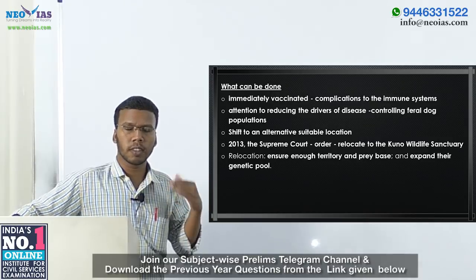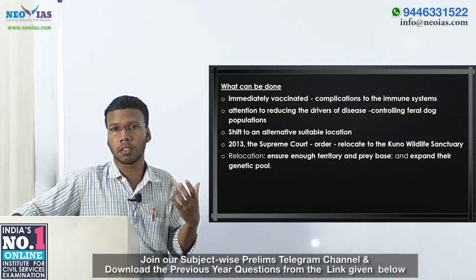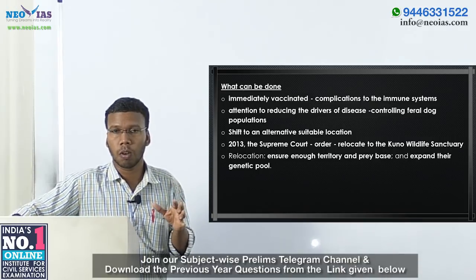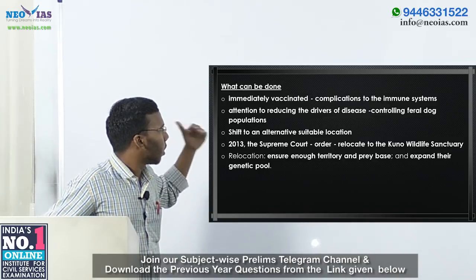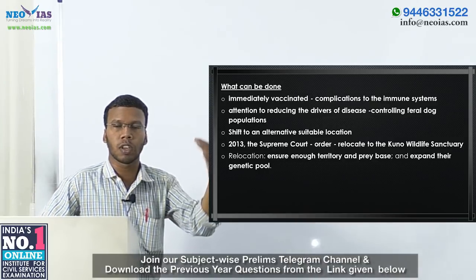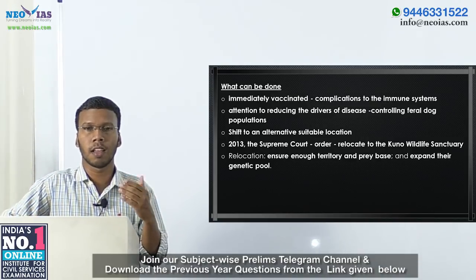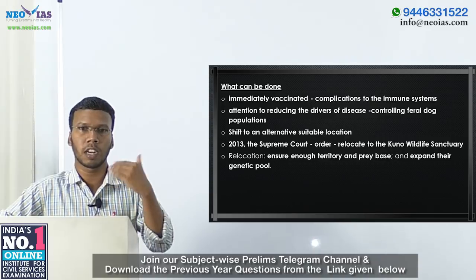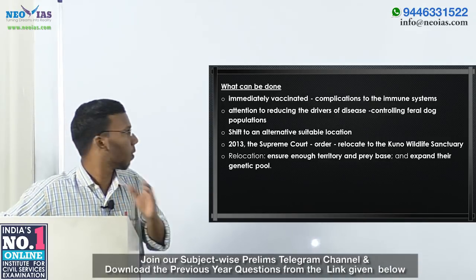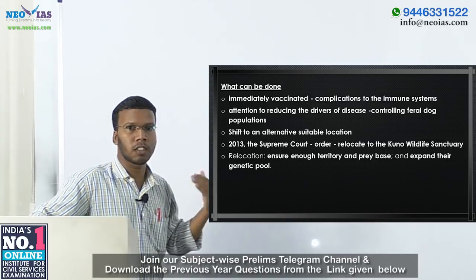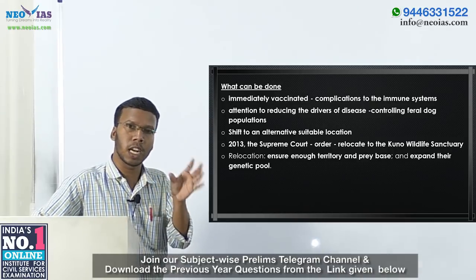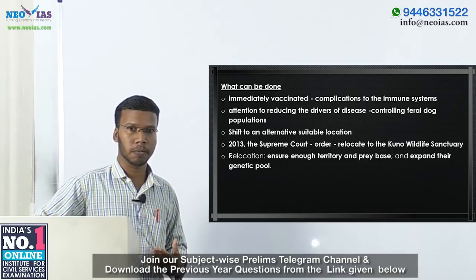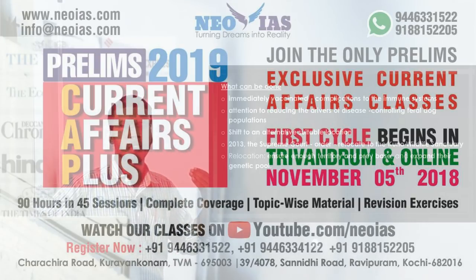So far, the Gujarat government has done a good job in preserving Asiatic lions. But now attention should focus on reducing the drivers of disease, such as controlling the feral dog population, since dogs are the carriers of CDV. We also need to rethink relocation as a long-term solution for protecting Asiatic lions.